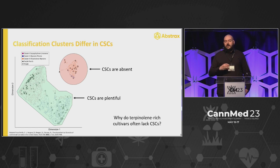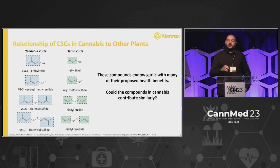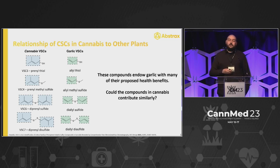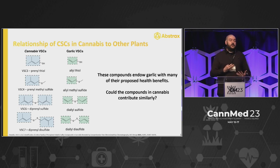Now that we know prenylthiol and prenylthiol acetate volatile sulfur compounds result in the skunky, gassy aroma, what can we utilize this for? We noticed that because garlic was our initial inspiration, the volatile sulfur compounds identified in garlic share the same structural family as what we saw in cannabis. In garlic: allyl thiol; in cannabis: prenylthiol. Where garlic has allyl methyl sulfide, cannabis has prenylmethyl sulfide. Where garlic has diallyl sulfide and diallyl disulfide, cannabis has diprenyl sulfide and diprenyl disulfide. These garlic organosulfur compounds give garlic not only its flavor and aroma but also many of its potential medical benefits — so it begs the question: do these organosulfur compounds identified in cannabis also have potential medical benefits?